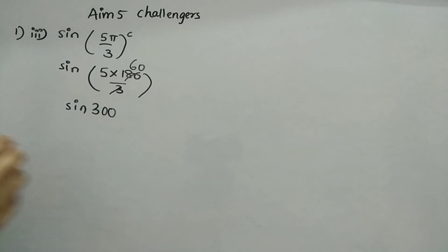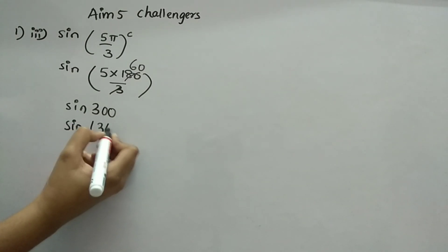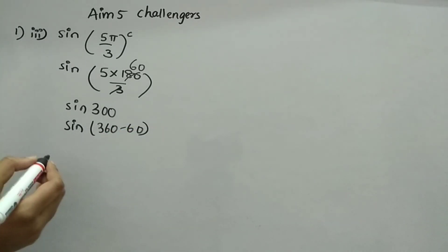Sine 300. Now, we have to solve actually. So, sine 300 in the sense, 360 minus 60. We can write.